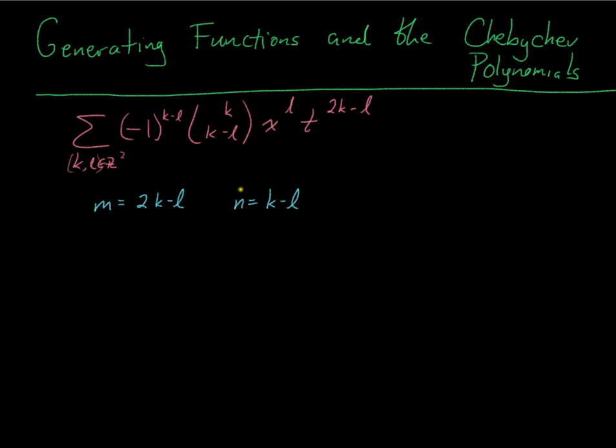To see if that's one-to-one, well, it's pretty easy to write down the inverse in a second. k would be m minus n, and l would be m minus 2n. So it's easy to see if these two substitutions are inverse of each other. So this is a one-to-one map from Z² to itself.